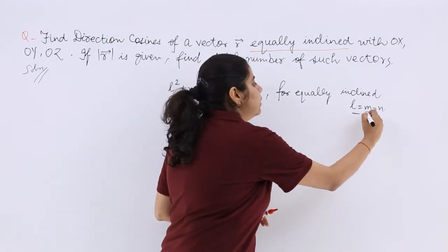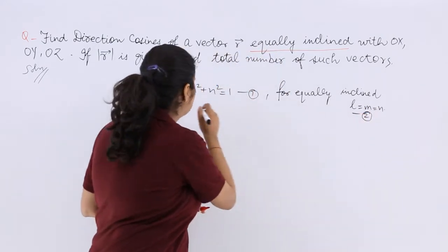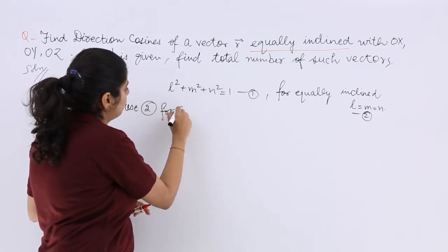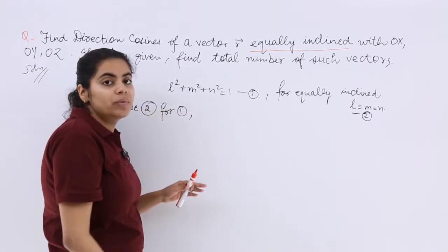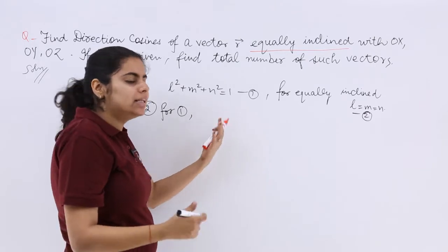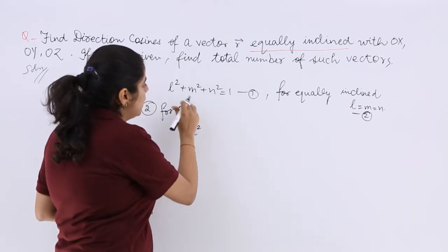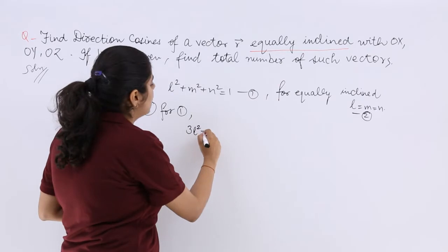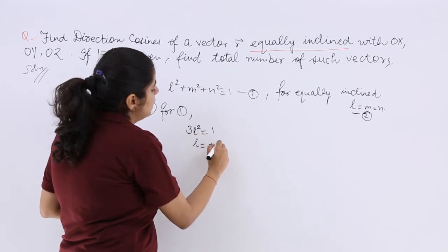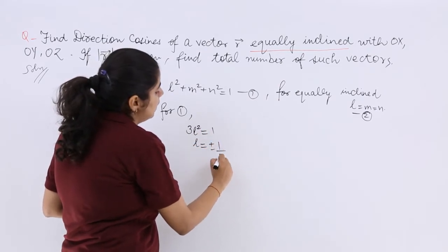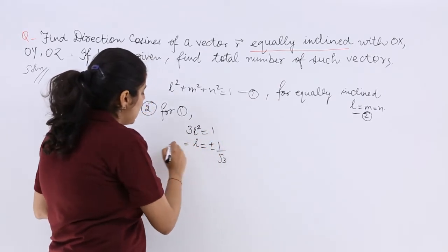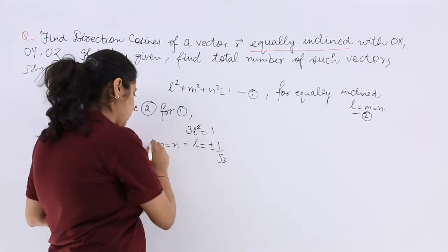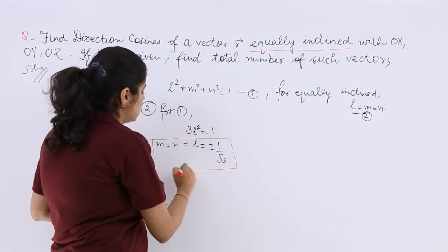This is equation number 2. Using equation number 2 in equation 1, L, M, N can be written as a single term. So L² + L² + L² from equation number 2 equals 1, which gives L = ±1/√3, and that is also equal to M and also equal to N. So this gives us the direction cosines.